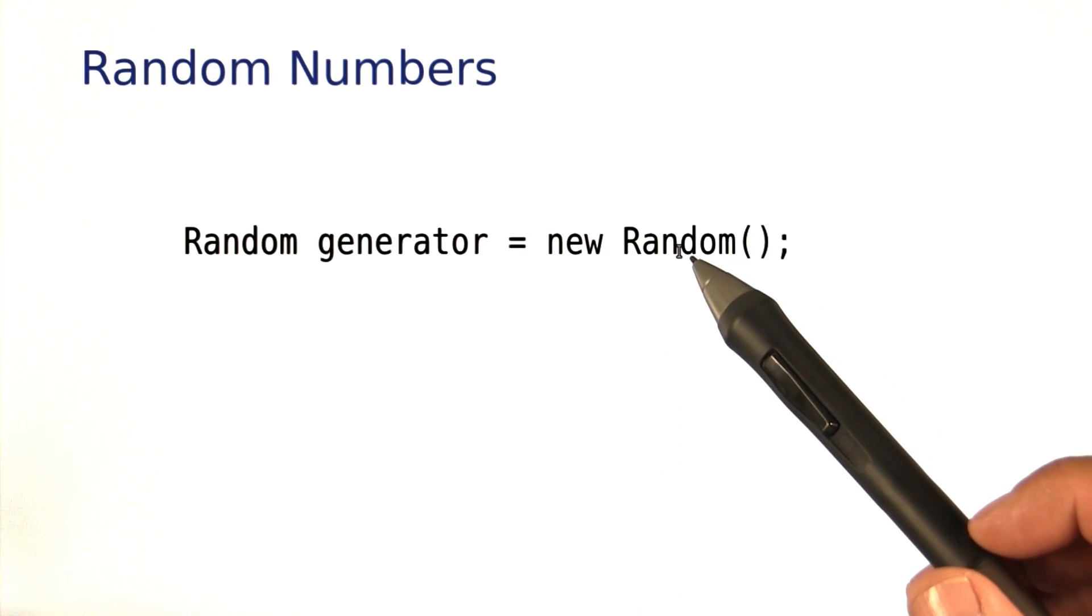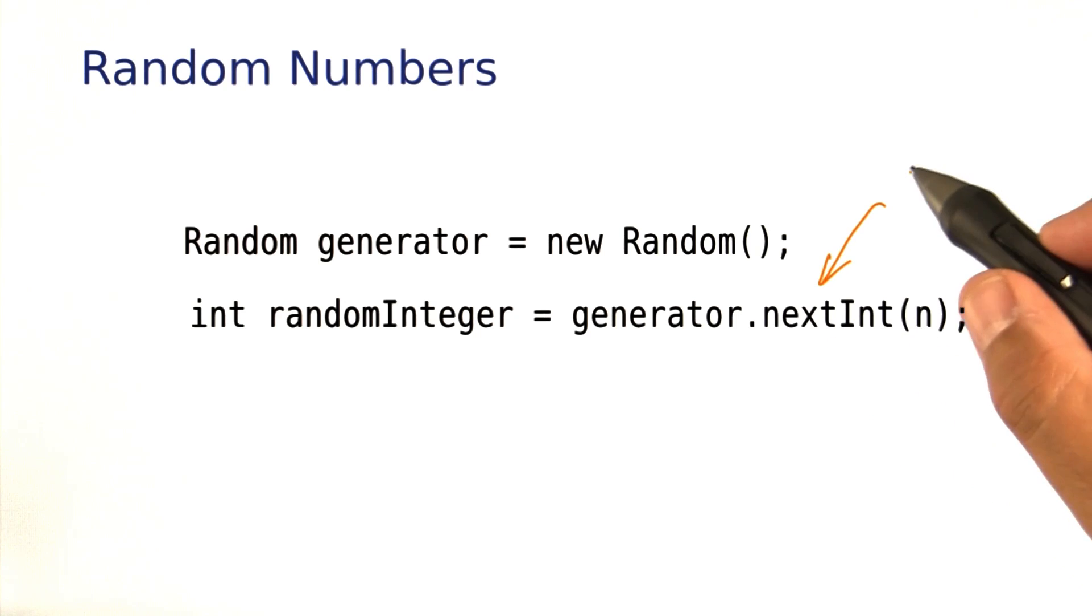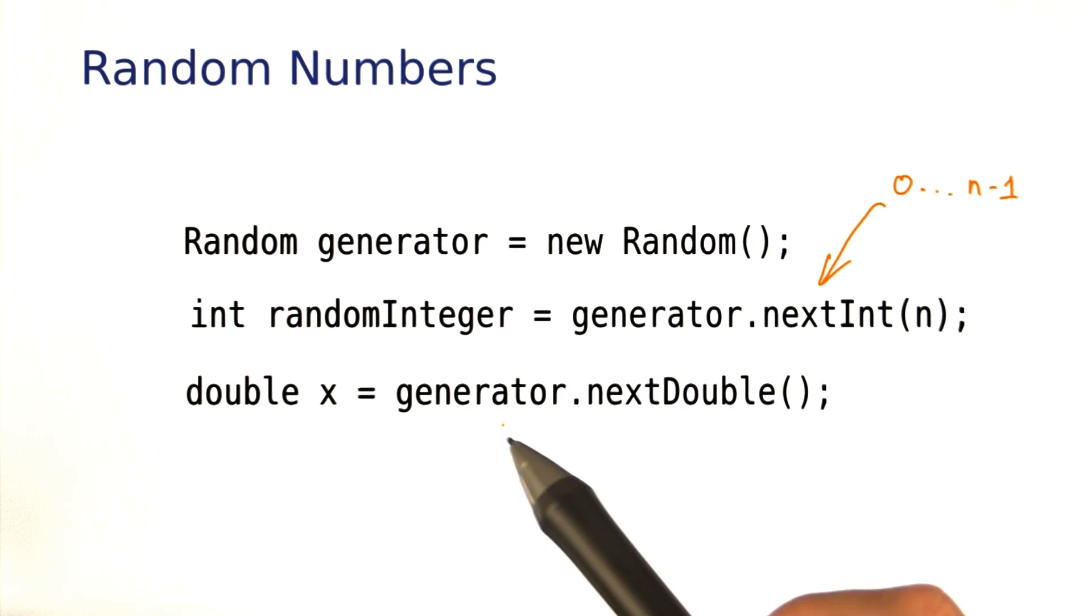You construct an object of the random class, and then you can ask it to give you another integer. You have to give it an upper limit, and you get an integer between 0 and n minus 1. You can also generate a random floating point number, and then you always get a number that's at least 0 but less than 1.